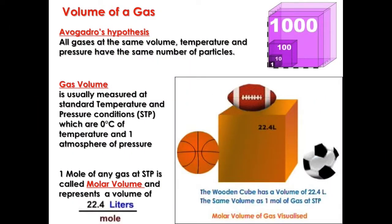Volume of a gas. Avogadro found that all gases at the same volume, temperature and pressure have the same number of particles. As a result, a gas volume is usually measured at standard temperature and pressure conditions, which is called STP, and that is at zero degrees of temperature and one atmosphere of pressure.